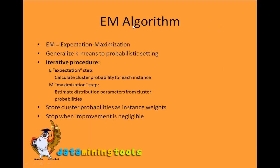The next algorithm is the EM algorithm — Expectation Maximization. We basically generalize k-means to a probabilistic setting. It is an iterative procedure with an expectation step, where we calculate cluster probability for each instance, and a maximization step, where we estimate probability parameters from the cluster. We store cluster probability as instance weights and stop when improvement is negligible — similar to k-means, but the internal steps are very different.